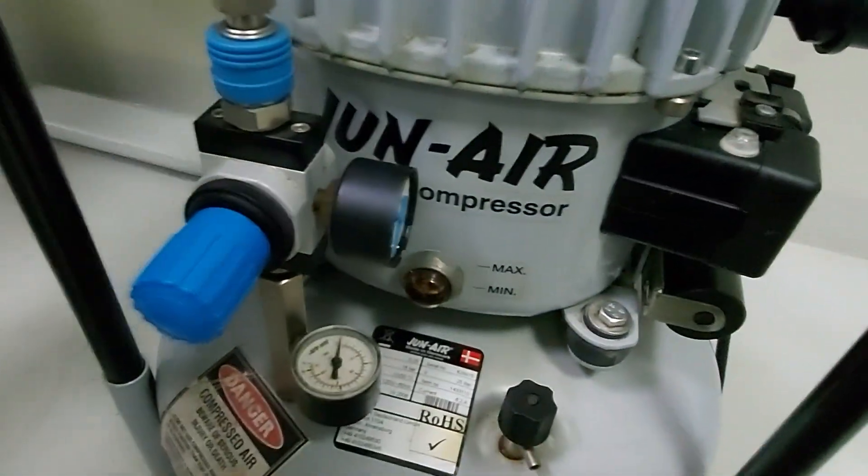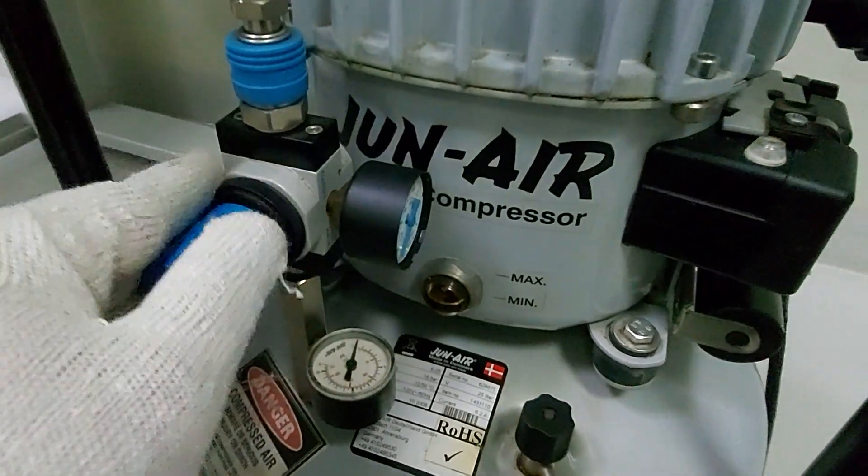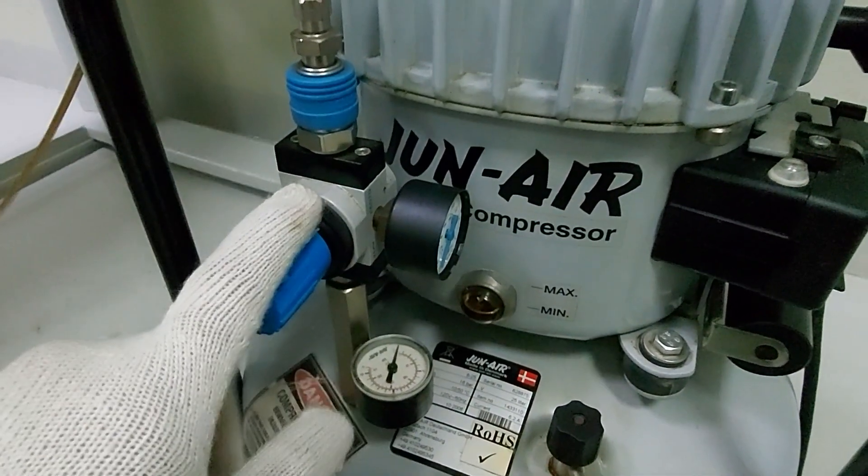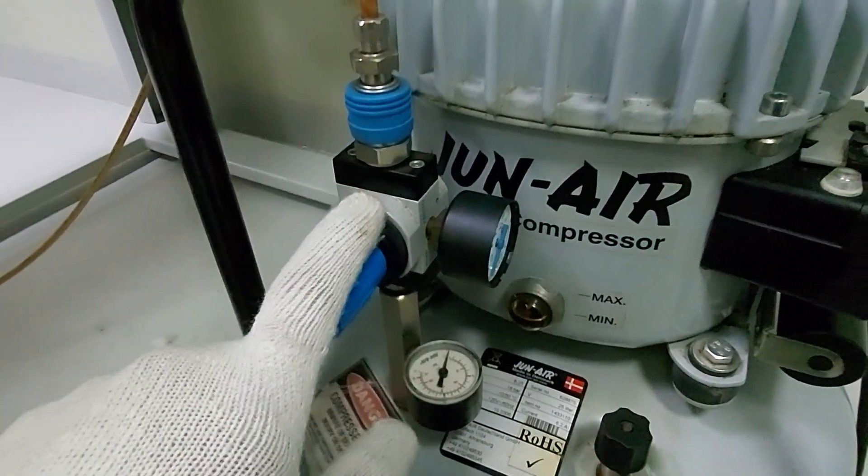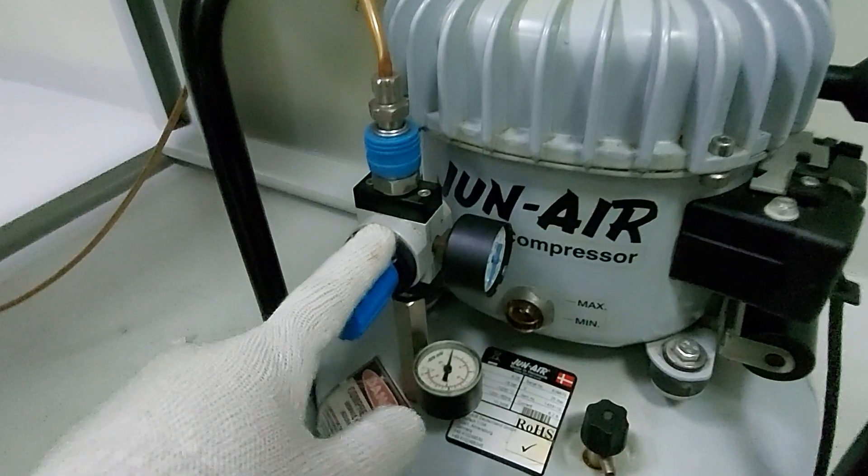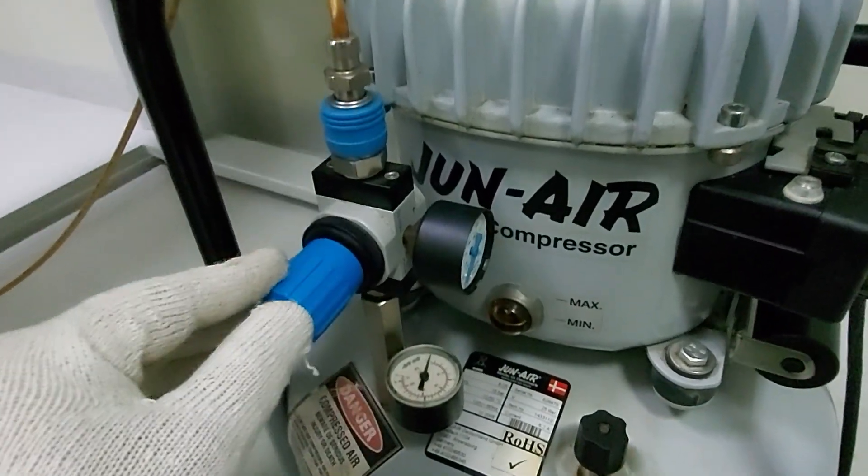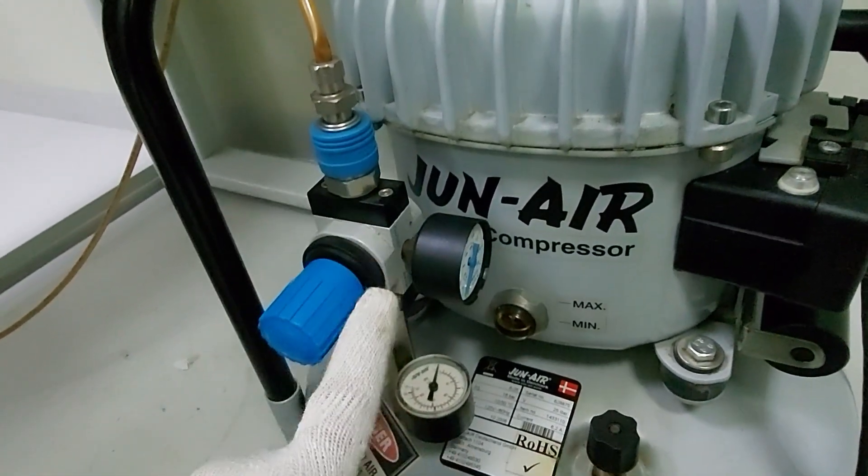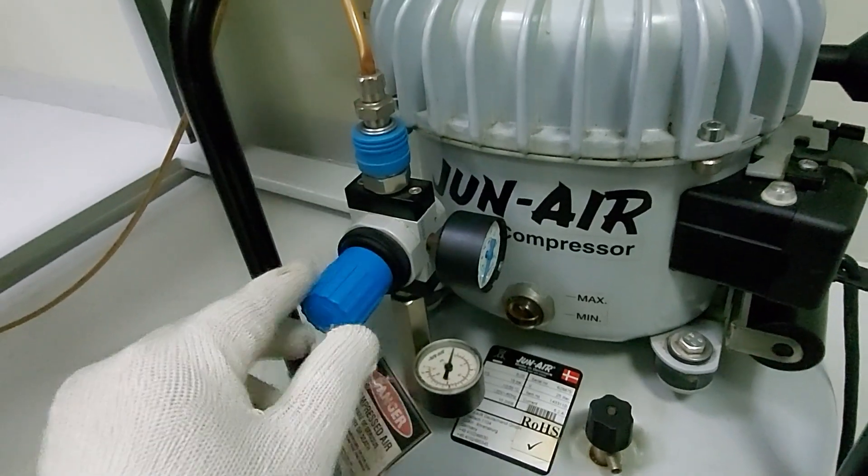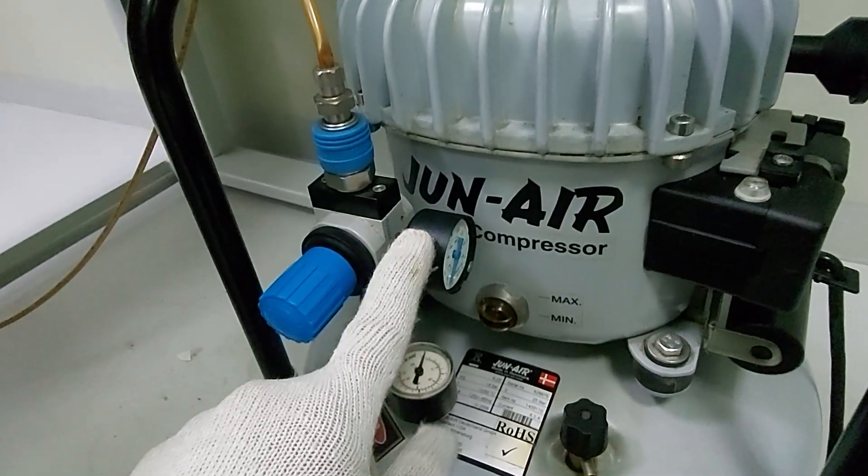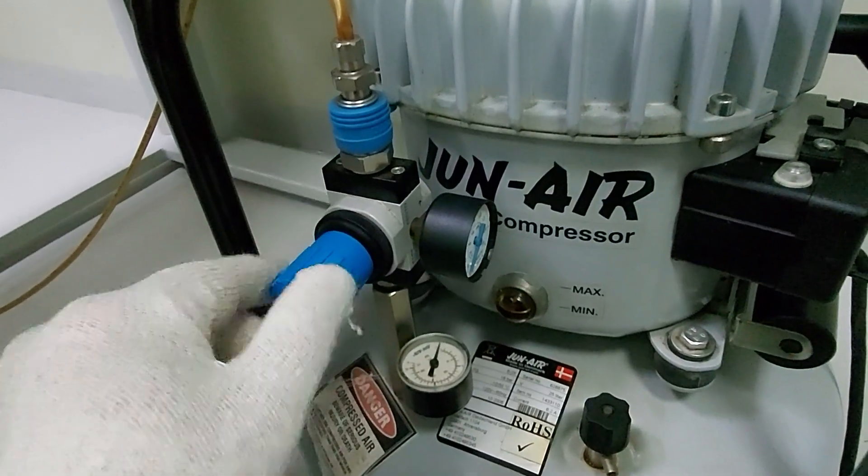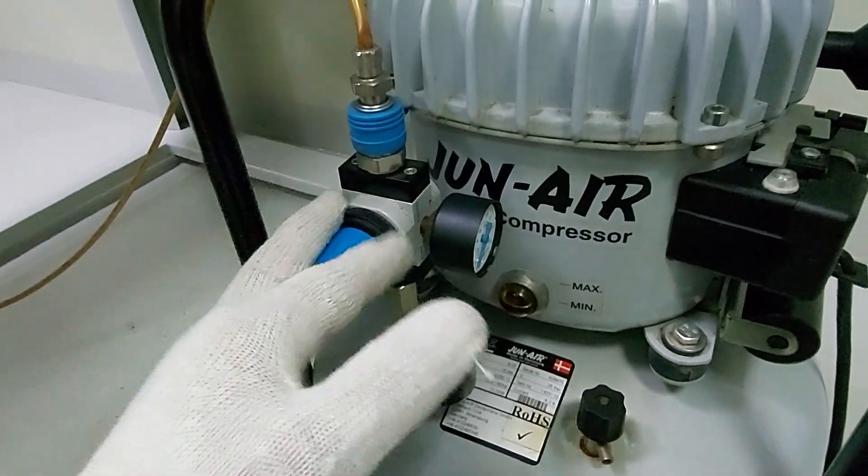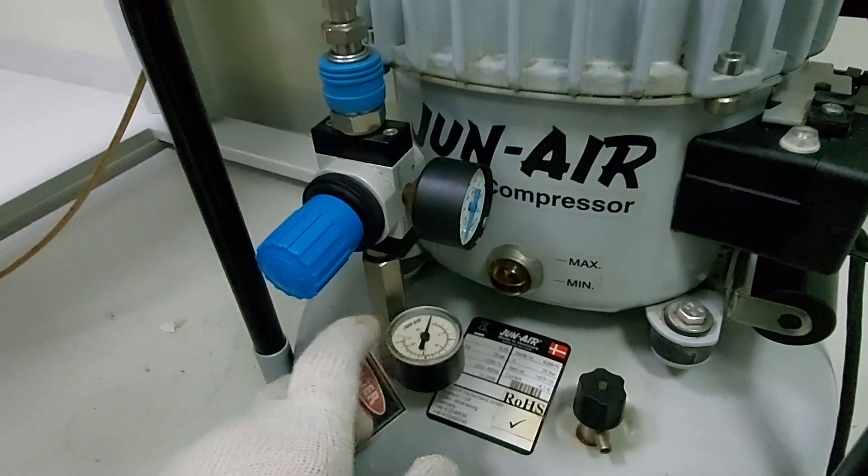Here you have a pressure regulator. There is a difference between pressure gauge and pressure regulator. Pressure gauge gives you the reading of the actual pressure, but the pressure regulator gives you the reading as well as you can adjust the pressure by this knob. You can increase and decrease the pressure. So you have an additional pressure gauge to monitor inside the tank and you have a pressure regulator.